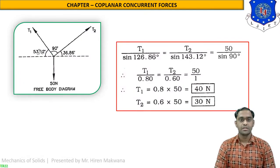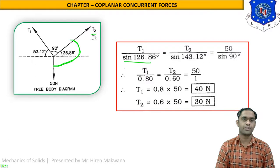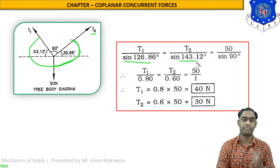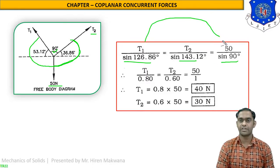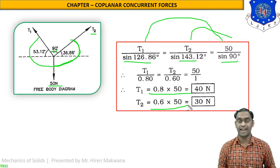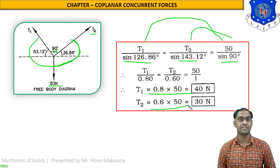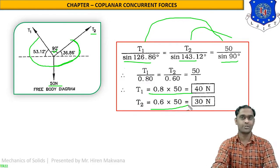Applying Lami's theorem at point B: for T1, the opposite angle is 36.86 + 90 = 126.86°, so T1 upon sin 126.86. For T2, the opposite angle is 53.12 + 90 = 143.12°, so T2 upon sin 143.12. For weight 50 Newton, the opposite angle is 90°, so 50 upon sin 90. Comparing first with third and second with third gives T1 = 40 Newton and T2 = 30 Newton. Angles are the key technique for Lami's theorem — practice these numericals. In the next lecture we will discuss more numericals. Thank you students, goodbye.